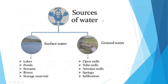Next are the sources of water — something we've been taught since primary school. Sources of water include surface water and groundwater. Surface water includes lakes, ponds, streams, rivers, and storage reservoirs. Groundwater includes open wells, tube wells, artesian wells, springs, and infiltrates.